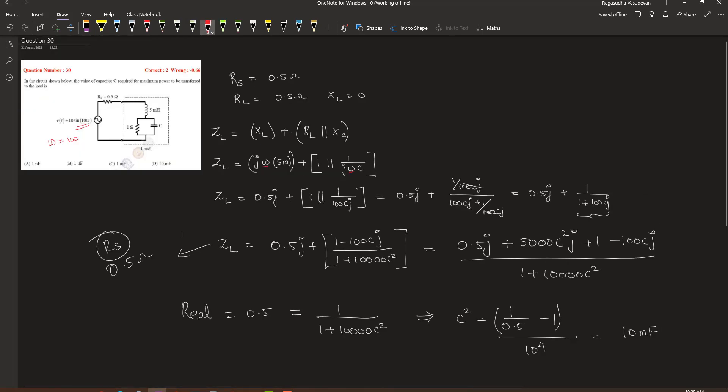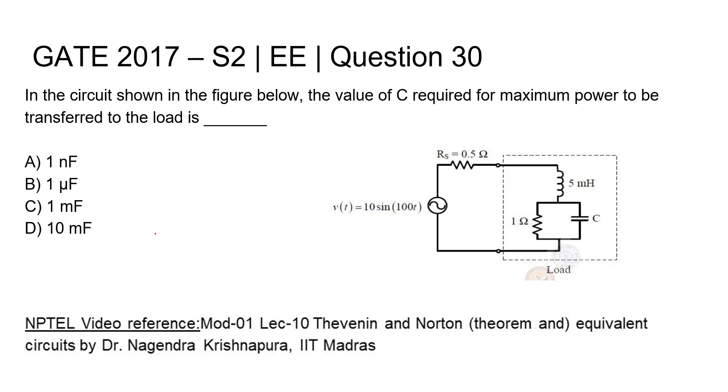So for maximum power to be transferred, the value of this capacitance should be 10 millifarad. And hence, the answer is option D, 10 millifarad. Thank you.